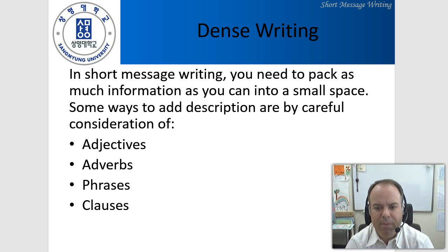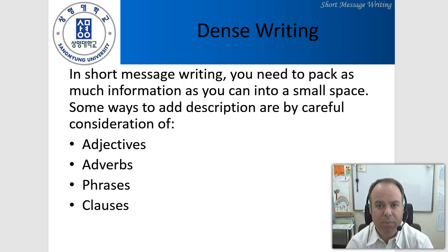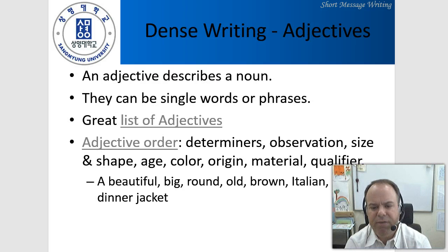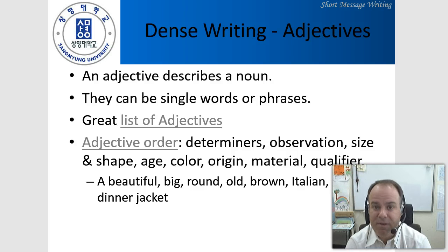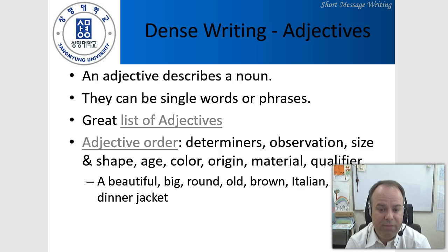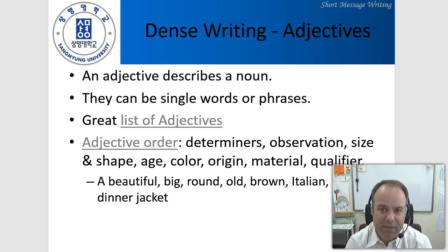For dense writing, what we want to do is pack as much information as we can into a short space. We do this by considering the proper use of adjectives, adverbs, phrases, and clauses. An adjective describes a noun. They can be single words or phrases. I've put in a couple of links here — when you access the presentation, you can click on those links and get a list of adjectives and also more information about adjective order, because adjectives take on a certain order when we make a list.